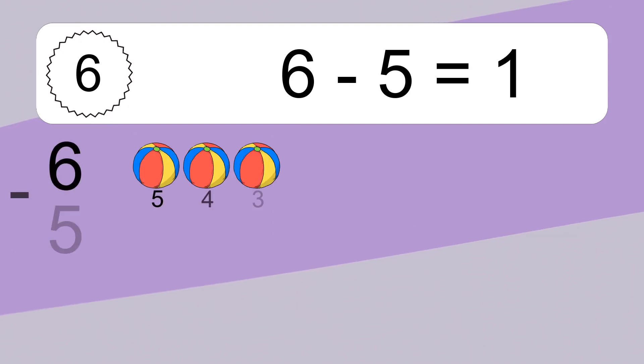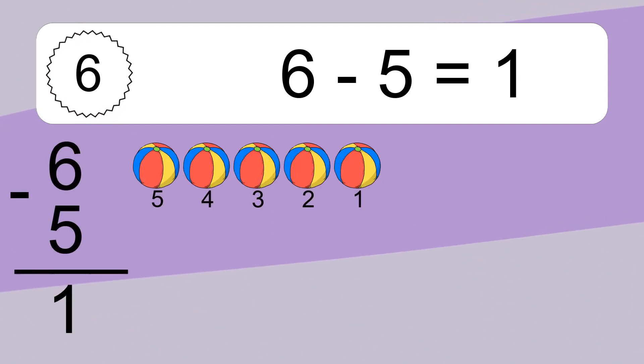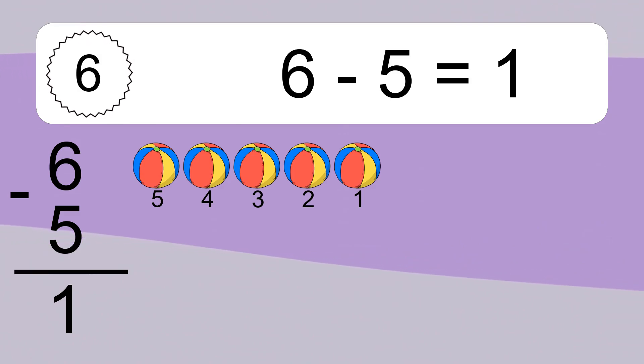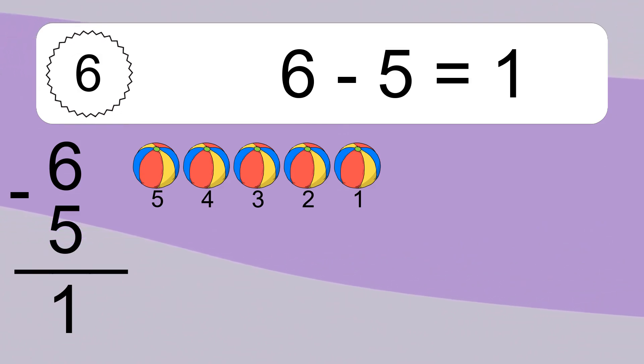6 minus 5 equals what? 6 minus 5 equals 1. Let's count it: 5, 4, 3, 2, 1.